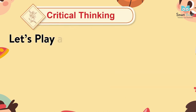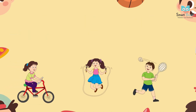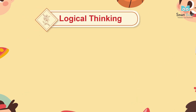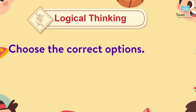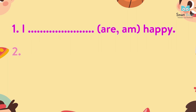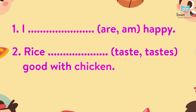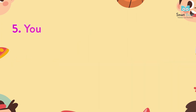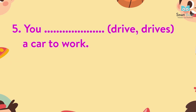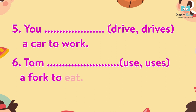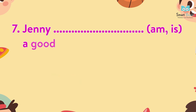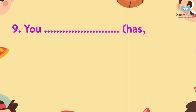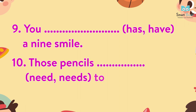Critical Thinking: Let's play a game. What do you think about each of these pictures? Describe in your words. Speak about these games and why they are good for mental health. Logical Thinking — Choose the correct options: 1. I am happy. 2. Rice tastes good with chicken. 3. He is wearing a blue shirt. 4. Roberto plays soccer. 5. You drive a car to work. 6. Tom uses a fork to eat. 7. Jenny is a good student. 8. Cars take people from one place to another. 9. You have a nice smile. 10. Those pencils need to be sharpened.